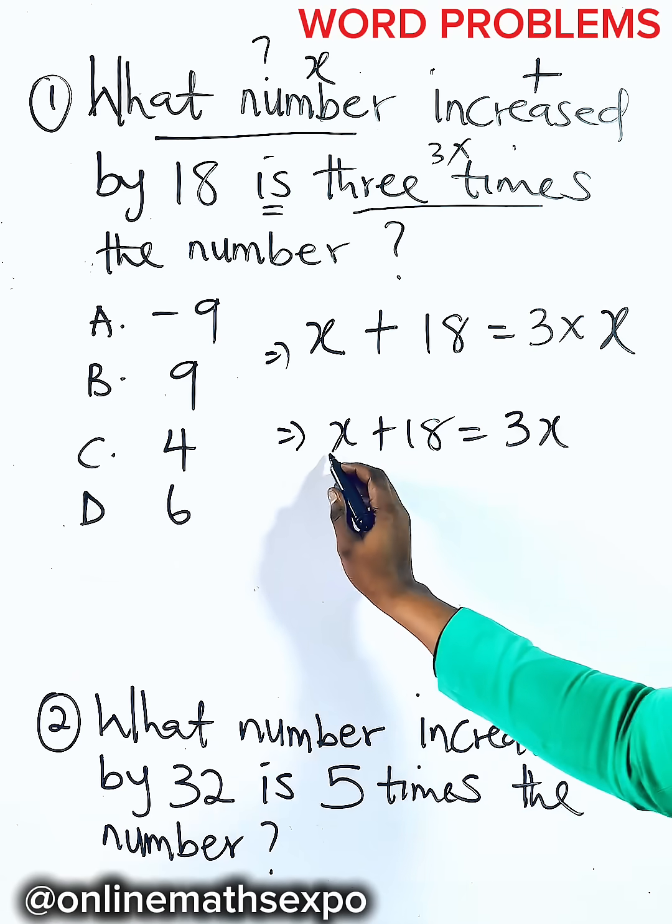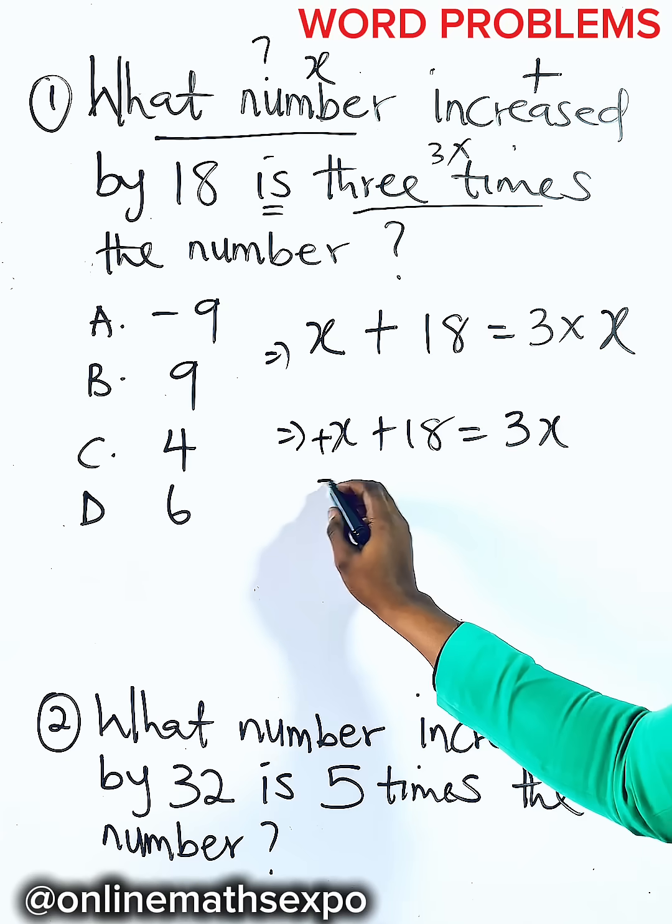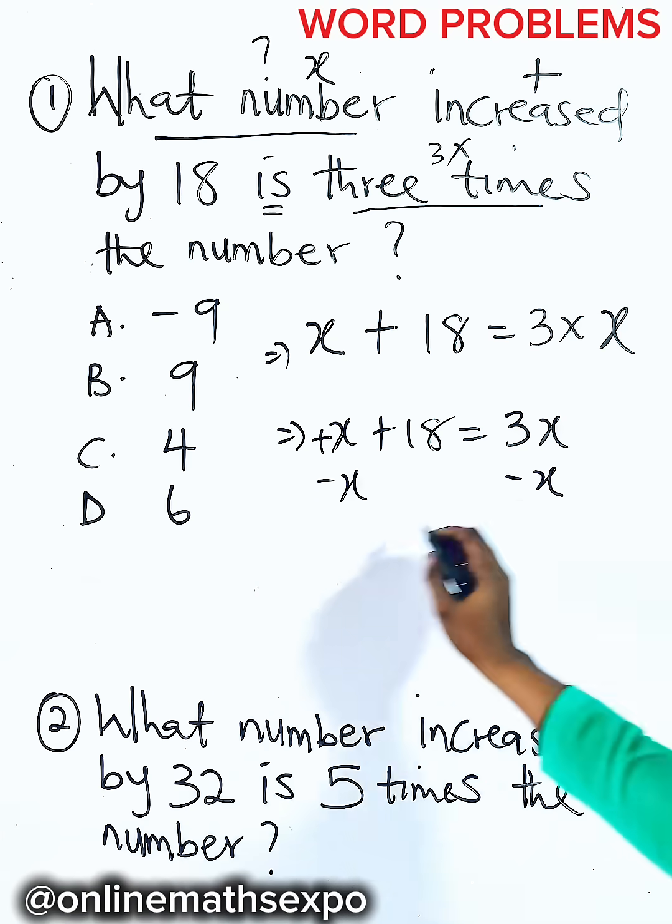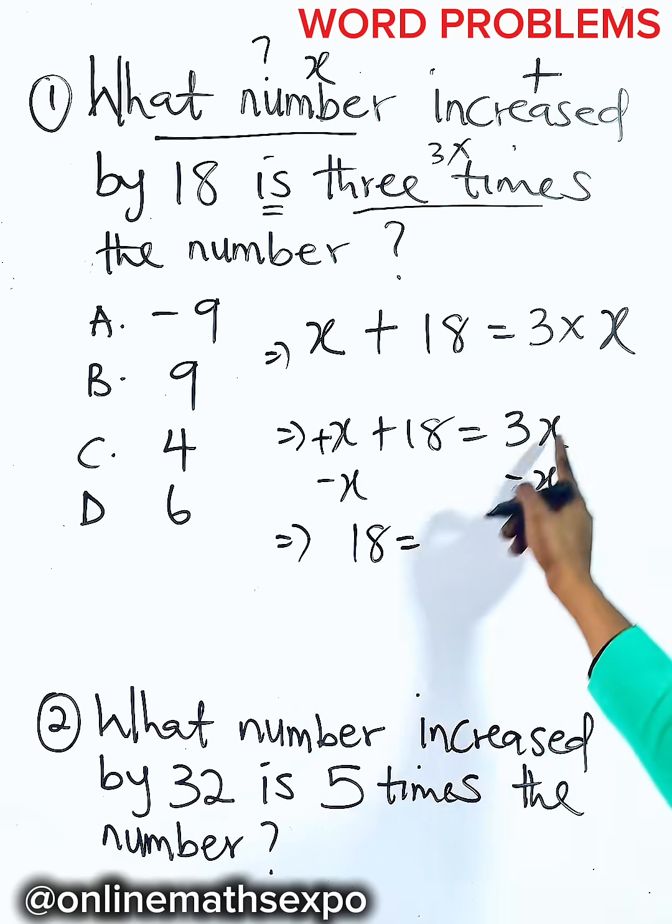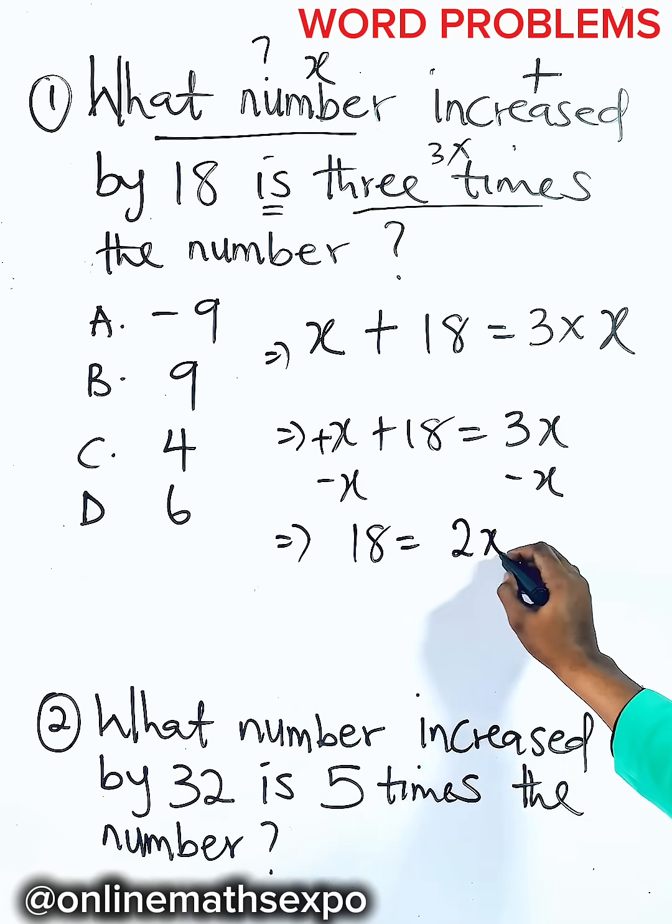So to solve this, you need to remove this x. It's positive, so you subtract x from both sides. You are going to have 18 is equal to, subtract this, you have 2x.